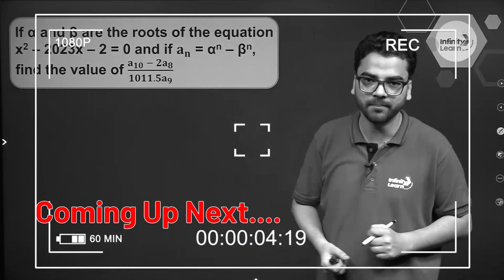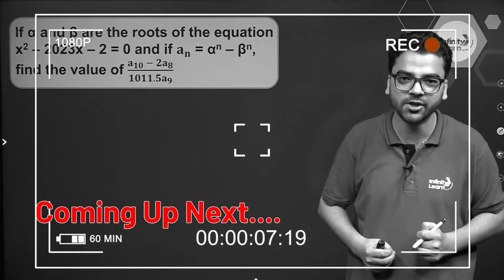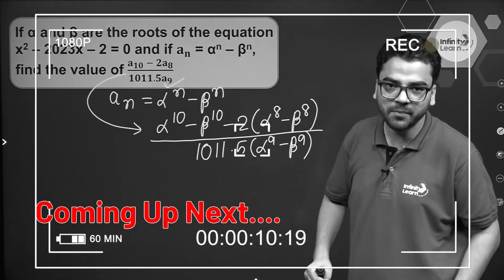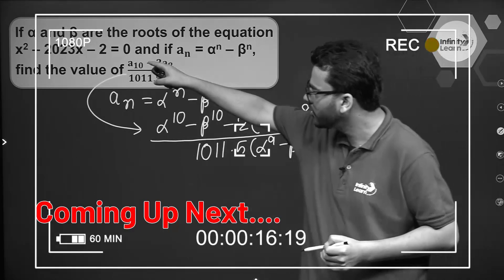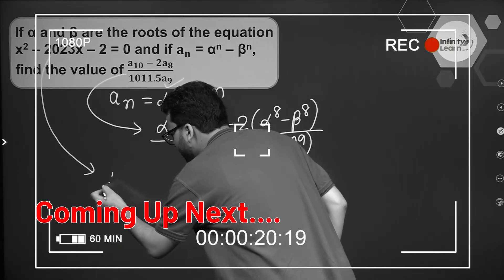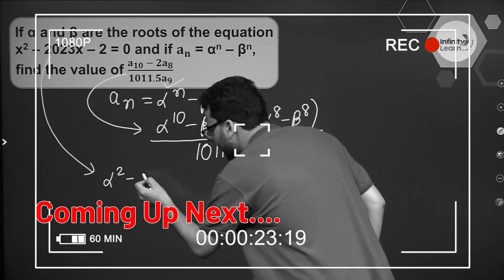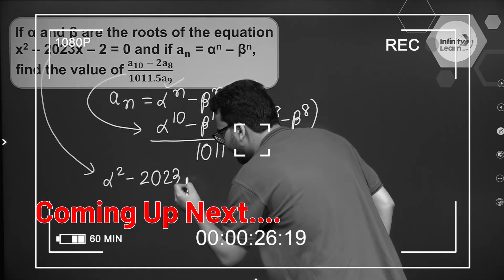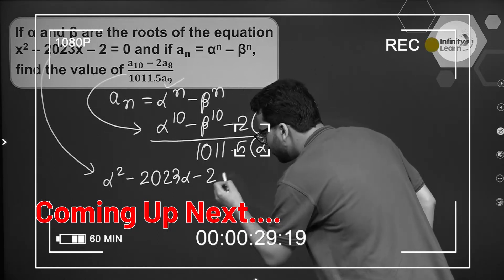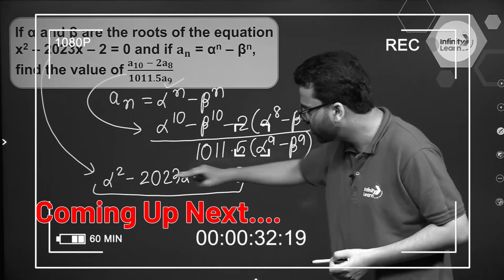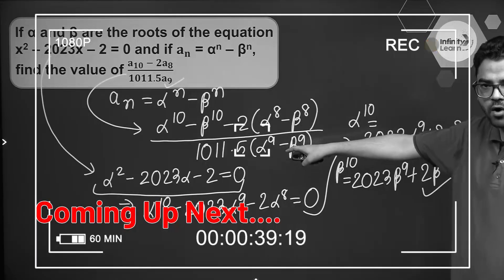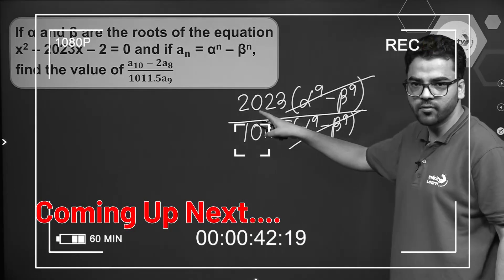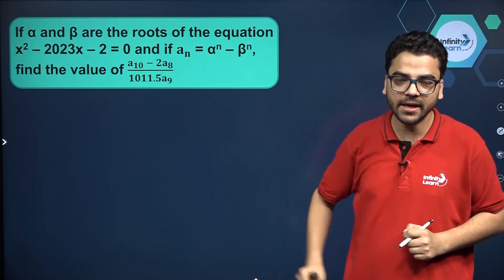We have to find the value of this expression. There is a trick to solve these types of questions — we cannot find alpha and beta separately, and trying to simplify directly will take too much time. We can work from the actual equation itself. Since alpha is a root, we get alpha squared minus 2023 alpha minus 2 equals 0. Multiplying by alpha to the power 8 gives us the answer: 2023 divided by 1011.5.